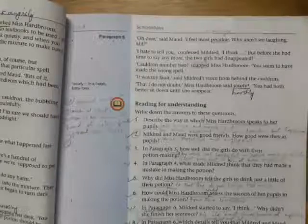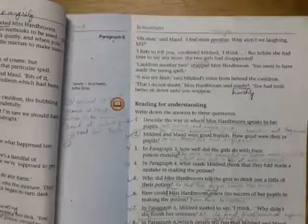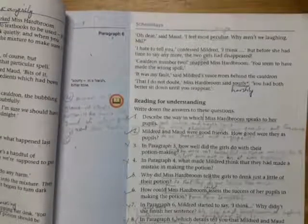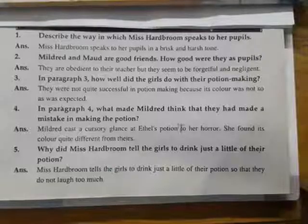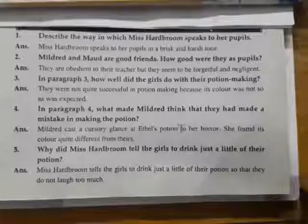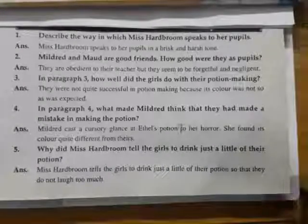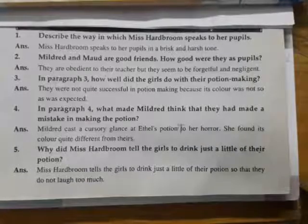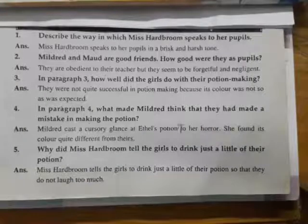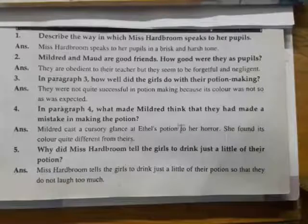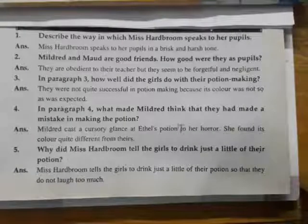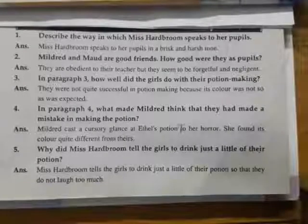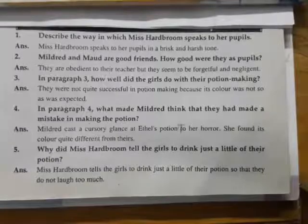So the lesson is done. Now we will move toward the questions and answers under the heading Reading for Understanding. First question: Describe the way in which Miss Hardbroom speaks to her pupils. Answer: Miss Hardbroom speaks to her pupils in a brisk and harsh tone. Second question: Mildred and Maud are good friends. How good were they as pupils? Answer: They are obedient to their teacher but they seem to be forgetful and negligent.